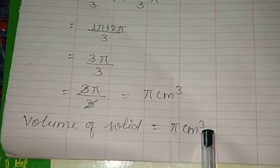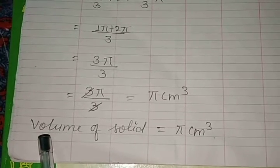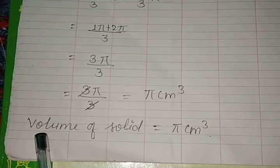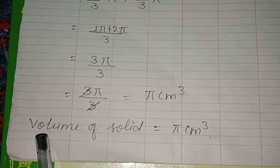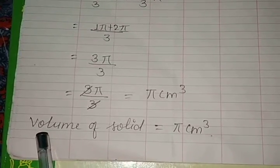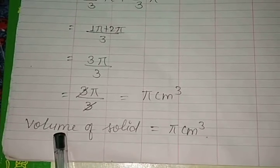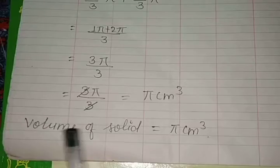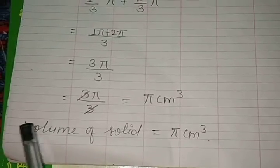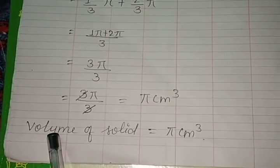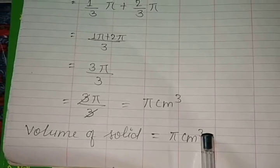The unit is cm³ — cube — because we are finding volume. As I told you in Exercise 13.1, when we find the area of any shape, we put the square in the unit. When we find the volume of any shape, we put the cube in the unit.